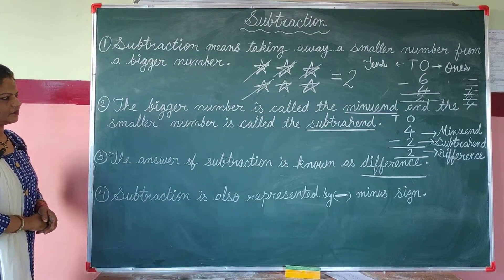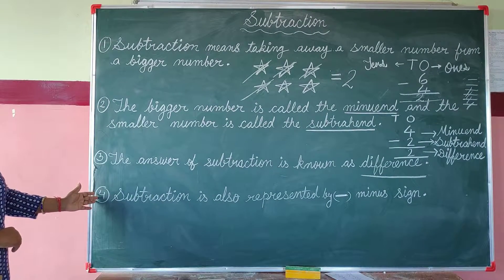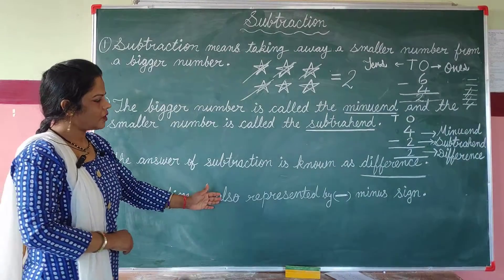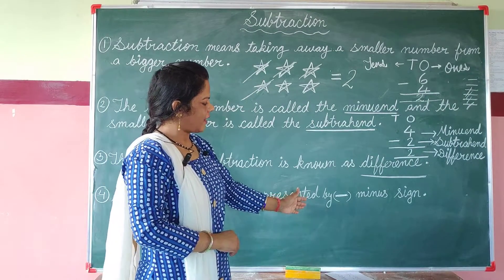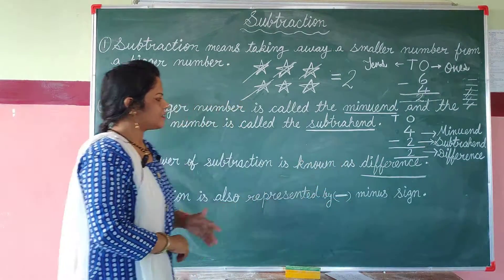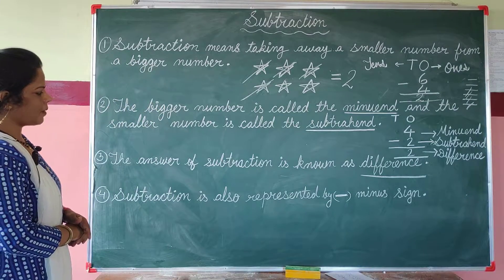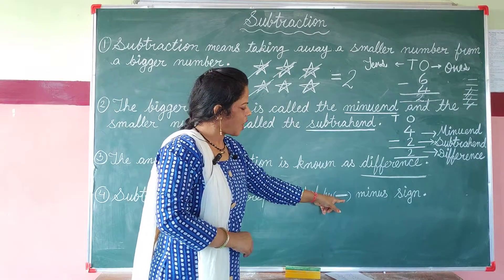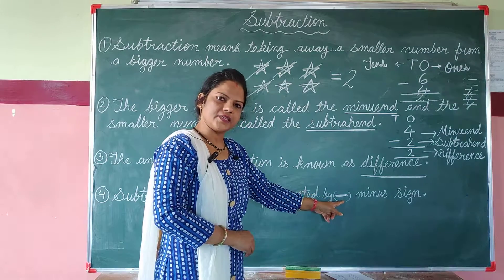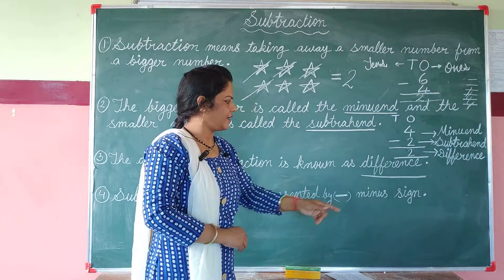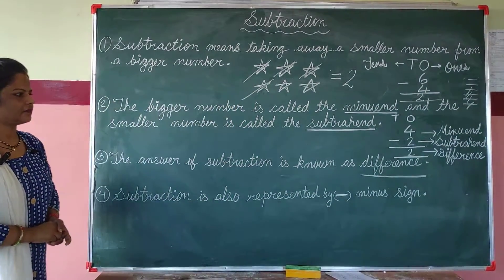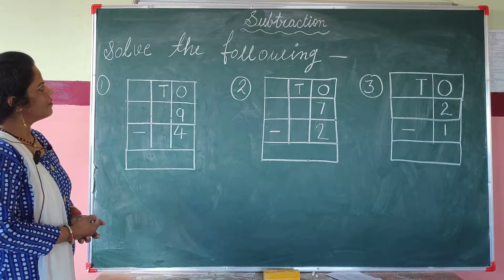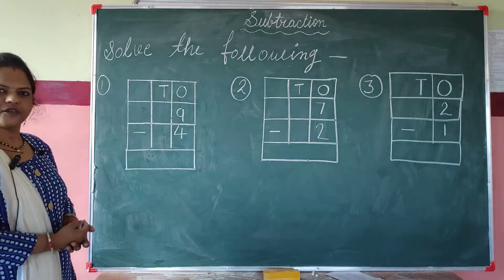Rule number 4: Subtraction is also represented by the minus sign. We represent subtraction using the minus sign — what you see here is called the minus sign. Now children, we will solve some one-digit number sums here.